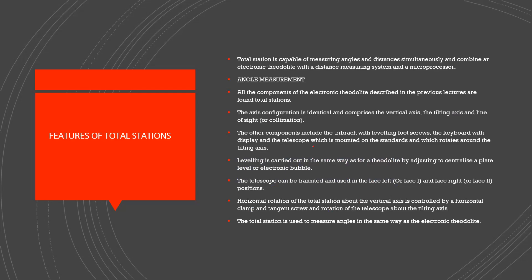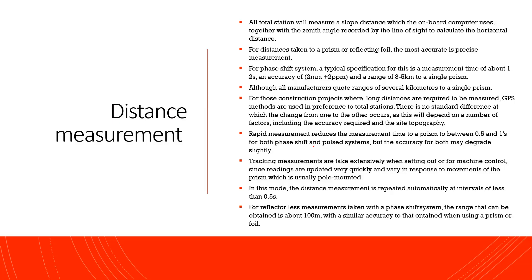We will talk about features of total station. The total station measures angle and distance simultaneously. It combines an electronic theodolite with a distance measuring system and microprocessor. We will talk about angle measurement, major parts, and distance measurement. There are options for rapid measurement — distance measurement with precision less than 0.5 seconds.